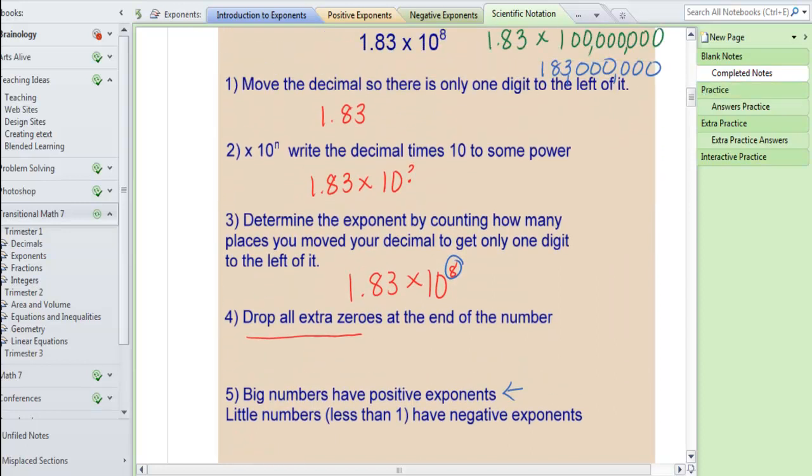Little numbers on the other hand, and what I mean by little numbers are numbers less than 1, have negative exponents. And that's because we want to end up with a smaller number. So if I had multiplied 1.83 times, let's say, 10 to the negative third, that would mean that I move my decimal back to the left.